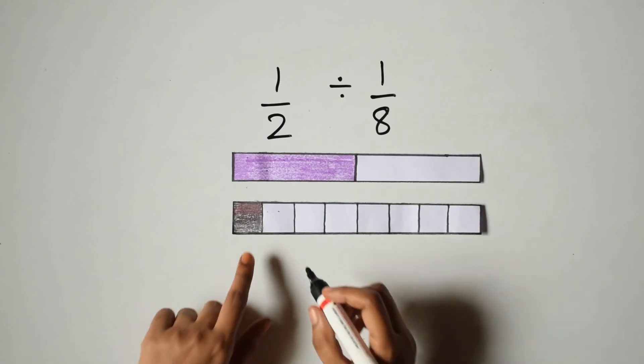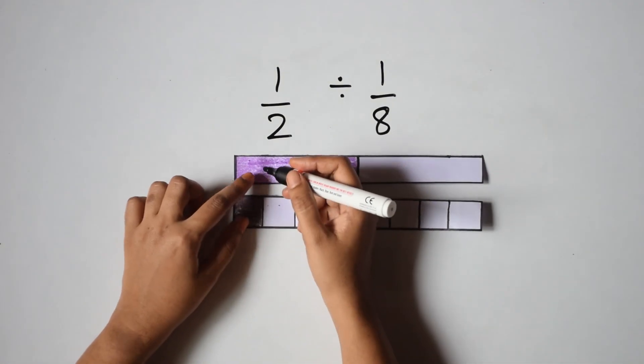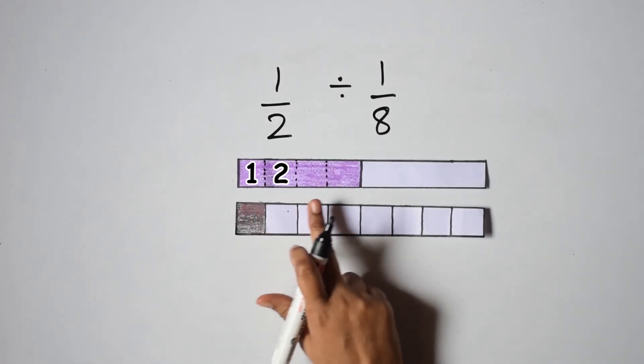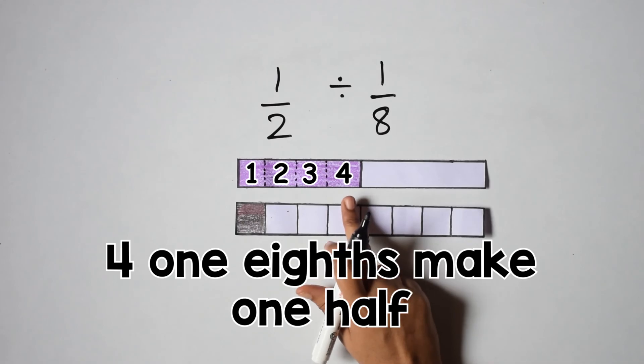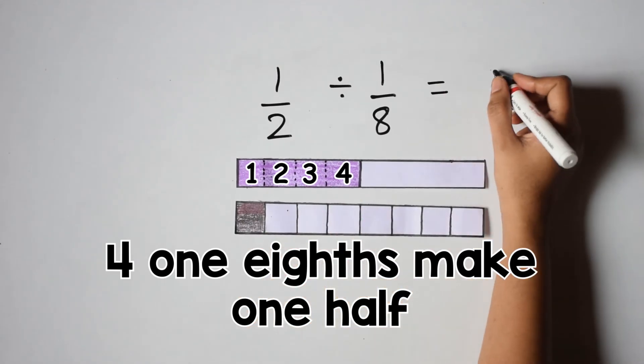Now let's look at how many one eighths are there here. To denote one eighths, I am going to roughly draw some lines. As we can see, there are 4 one eighths in this half. So the answer is 4.